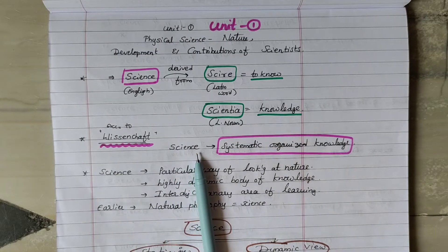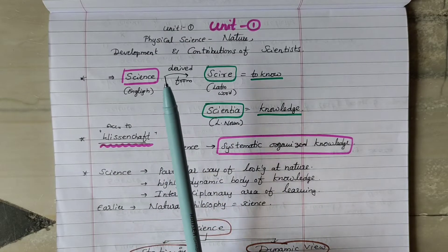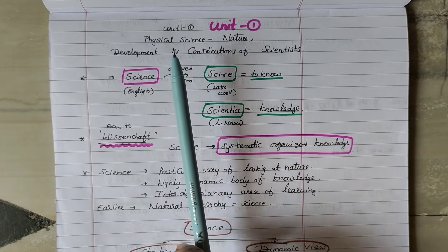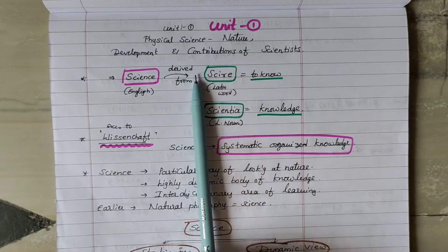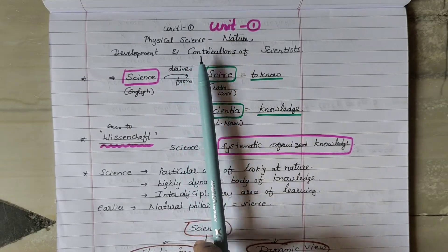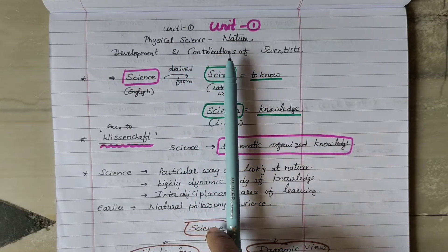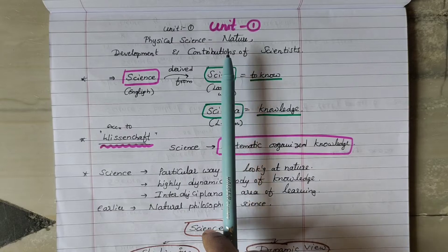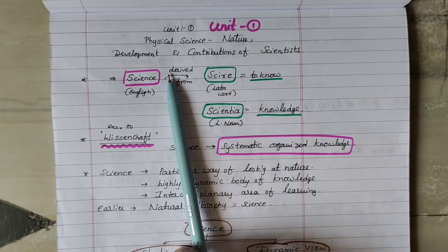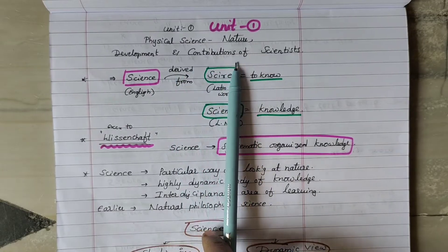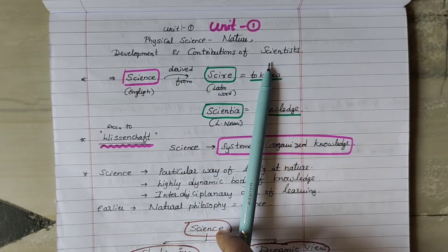First, we have the first chapter in the 10 chapters. The first chapter is: Physical Science in Nature, Development, and Contributions of Scientists.